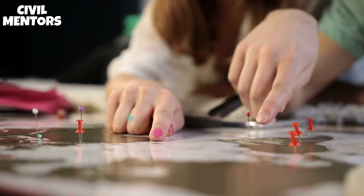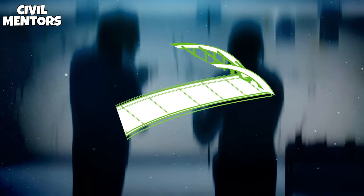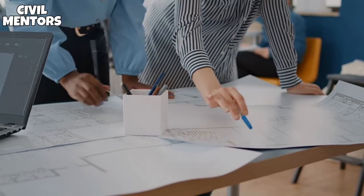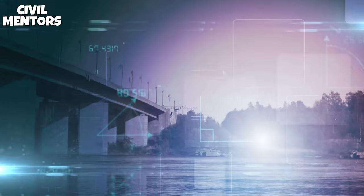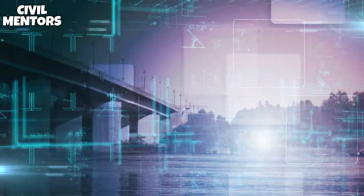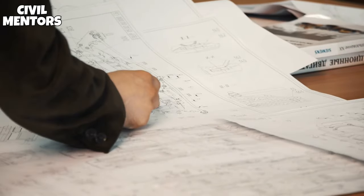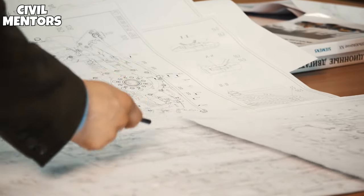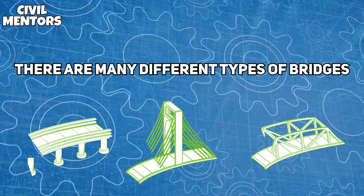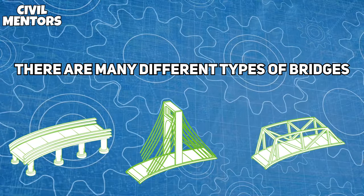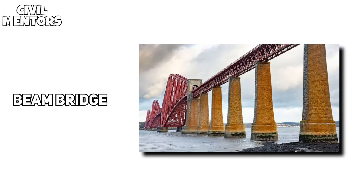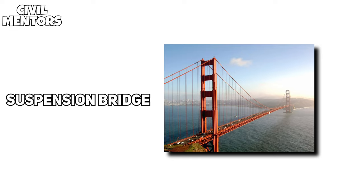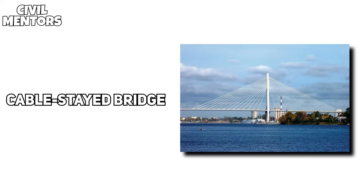Once the location has been determined, the next step is to design the bridge. This involves deciding on the type of bridge to be built, determining the size and shape of the bridge's components, and calculating the loads and stresses that the bridge will need to withstand. There are many different types of bridges, each with its own set of strengths and limitations. Some common types include beam bridges, arch bridges, suspension bridges, and cable-stayed bridges.